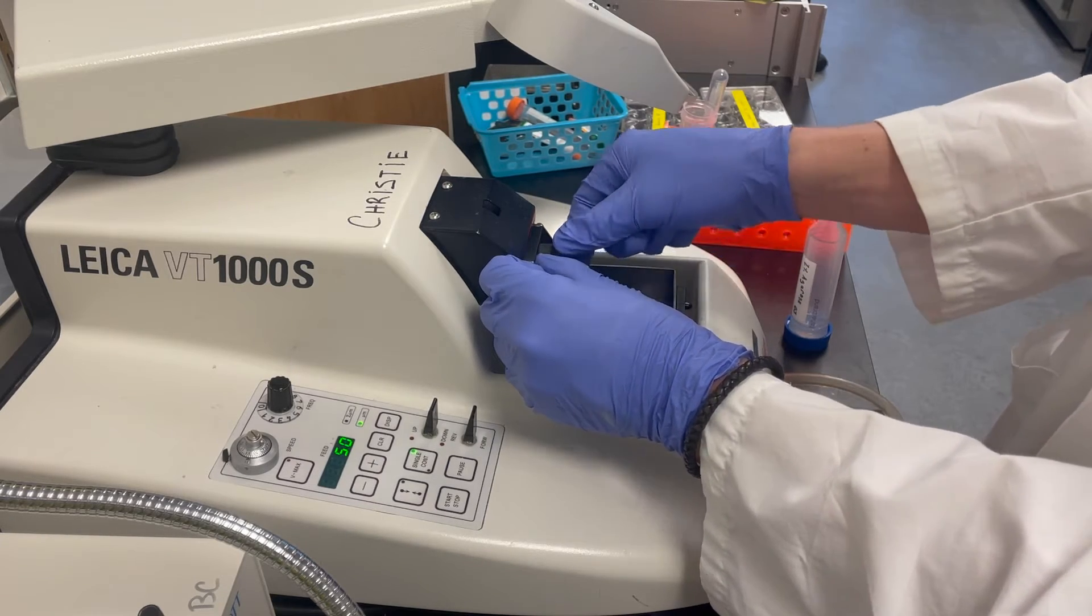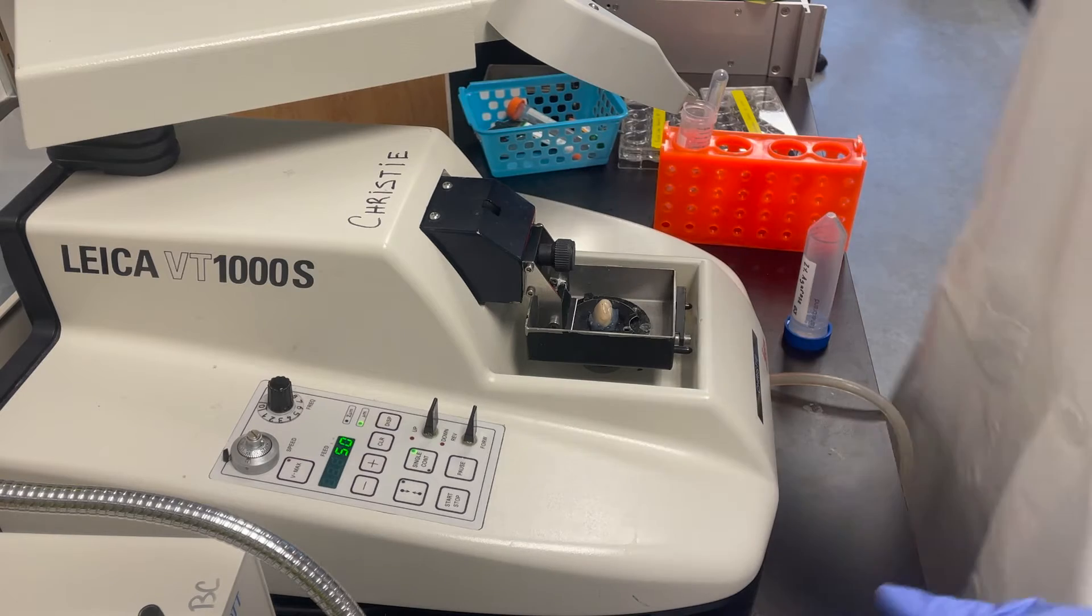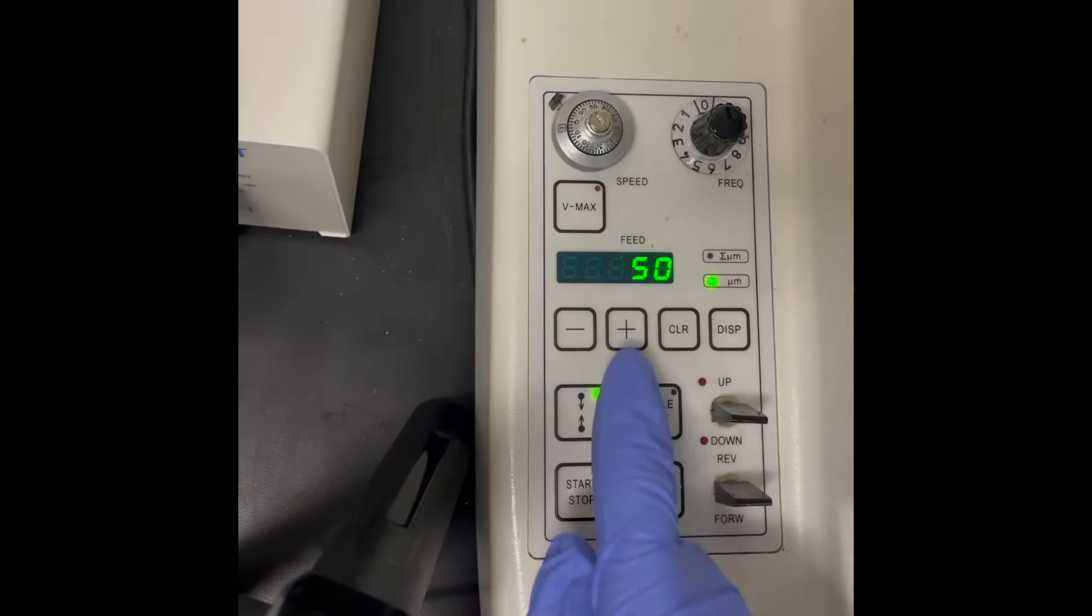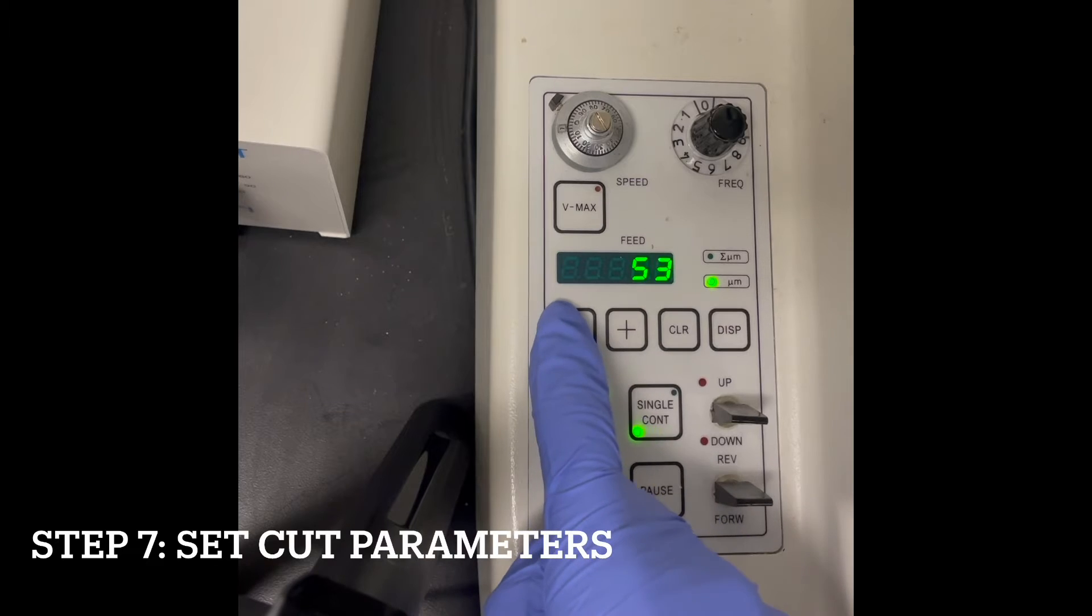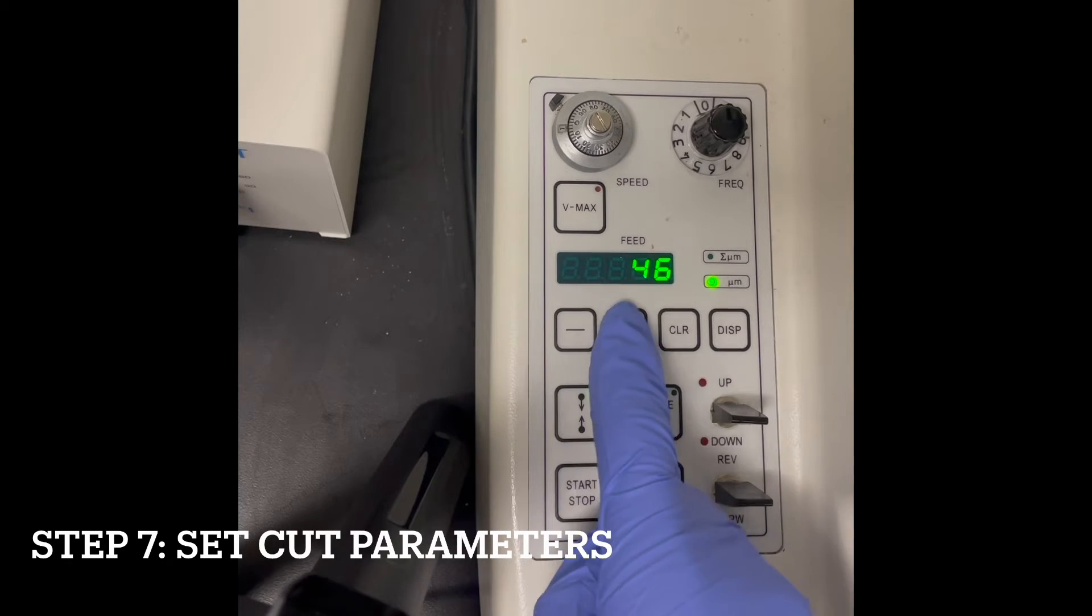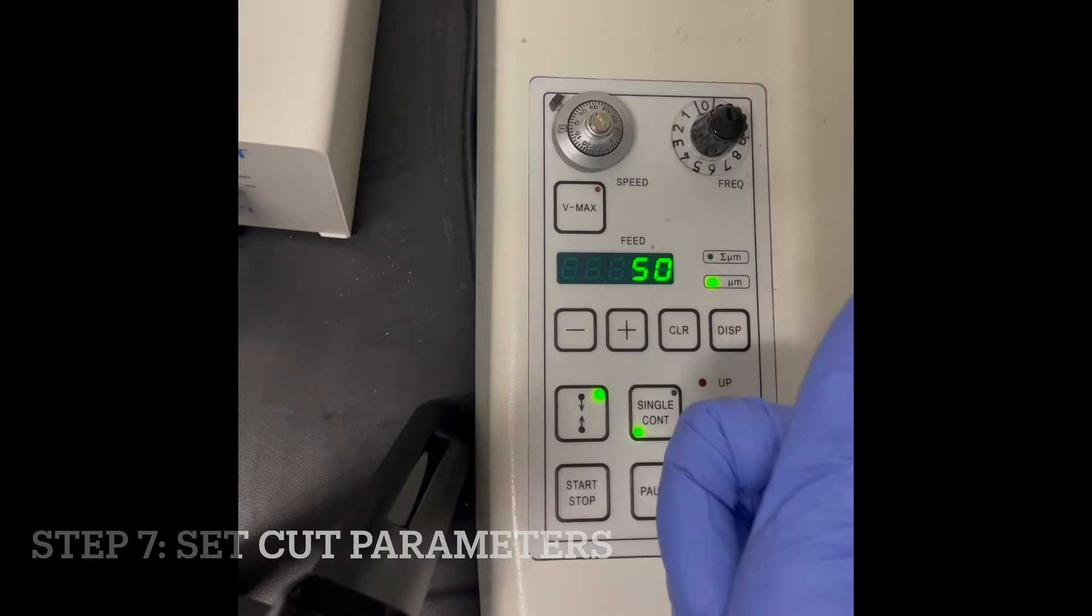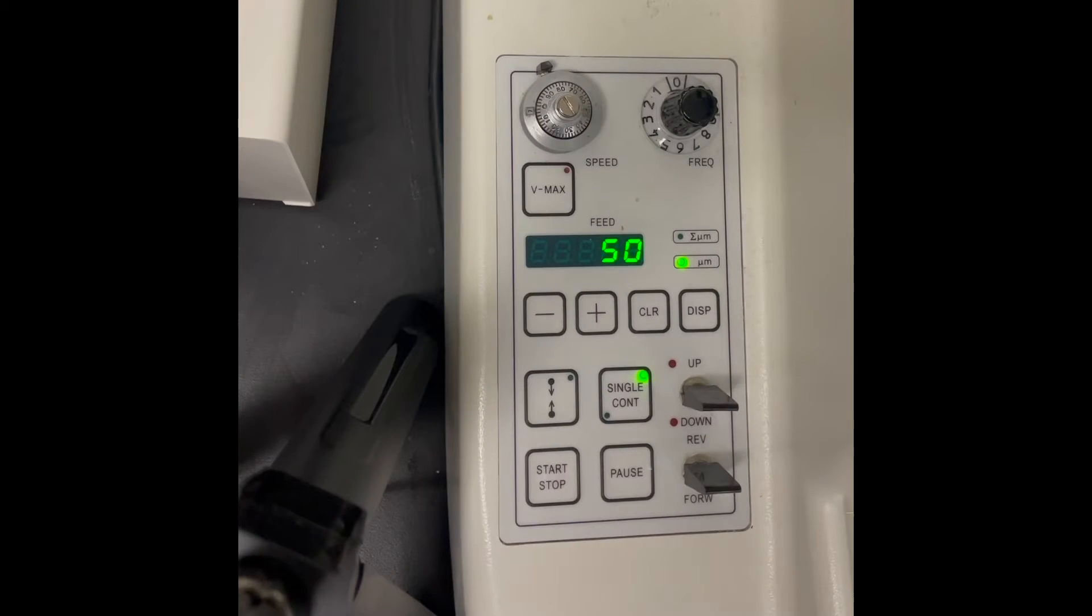Next, we're going to adjust the settings on the machine to fit the ideal parameters. First, we'll take a look at the slice thickness, which can be adjusted using the plus and minus buttons. For our protocol, we use 50 micrometer thick slices.